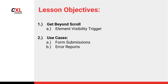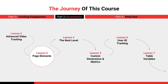Let's continue tracking engagement with page elements. The lesson objectives for today is to get beyond scroll, and we're going to do that with the element visibility trigger. It's a whole new trigger we have yet to play with, and we're going to give you a couple of use cases: one is hard-to-track form submissions, and the other is automated error reporting.